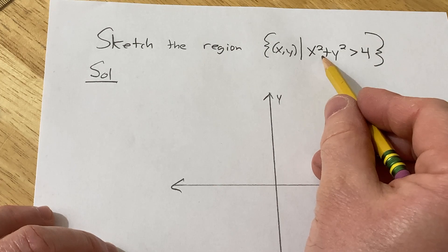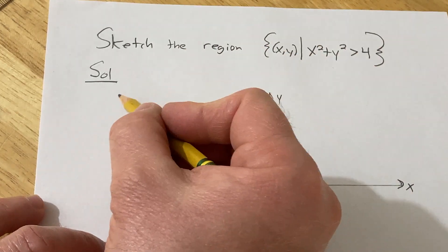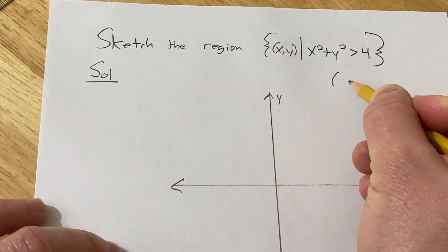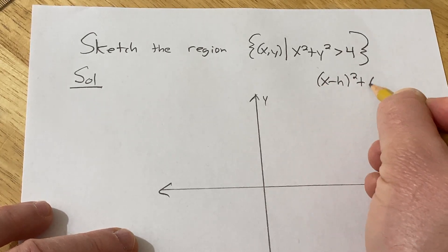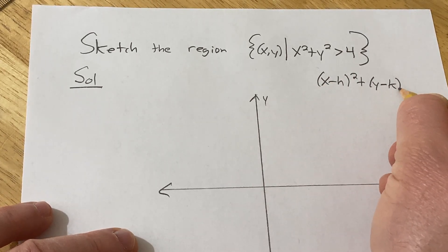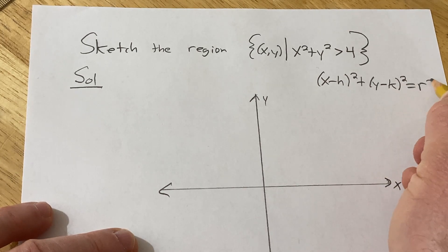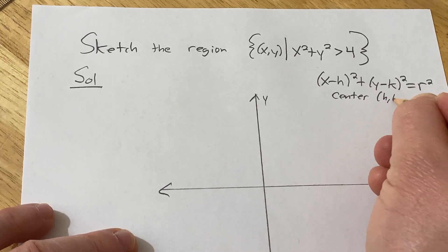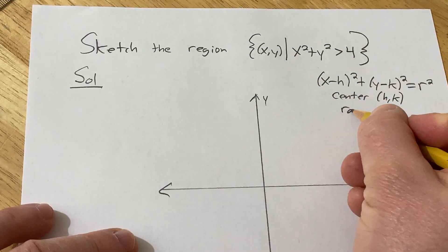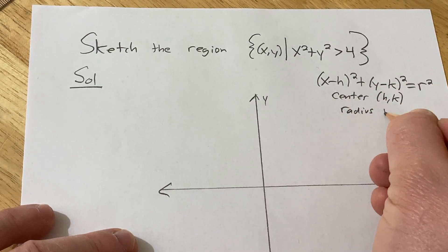So first note, this kind of looks like a circle. Recall the equation of a circle has the form (x - h)² + (y - k)² = r². And in this equation, the center is given by (h, k) and the radius is r.